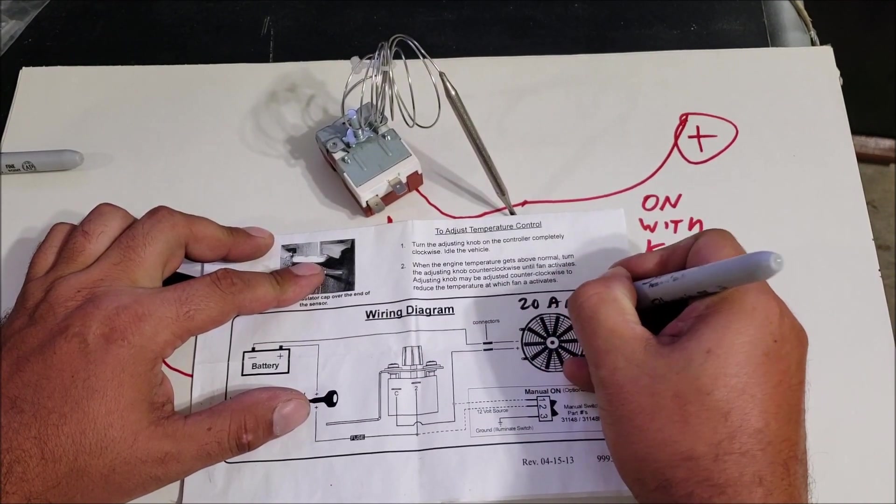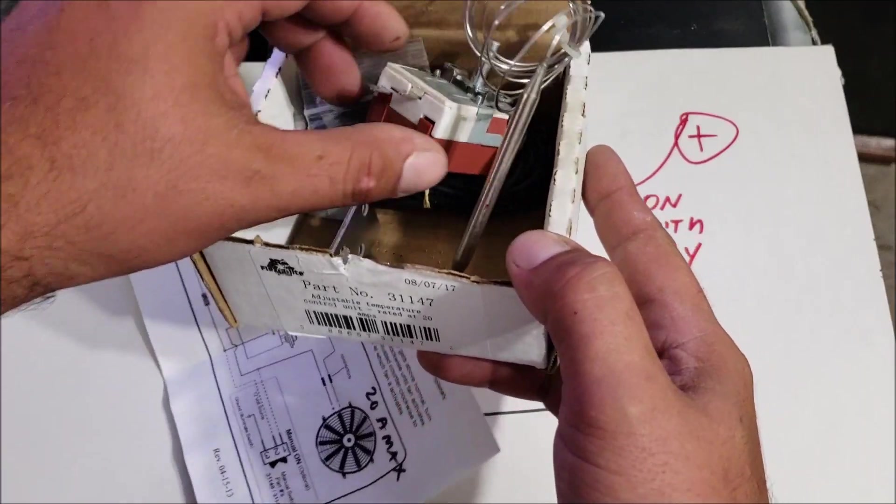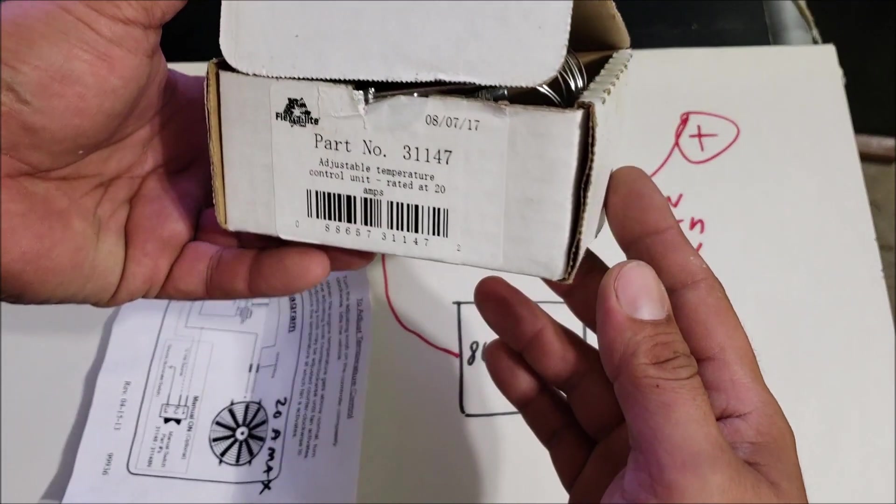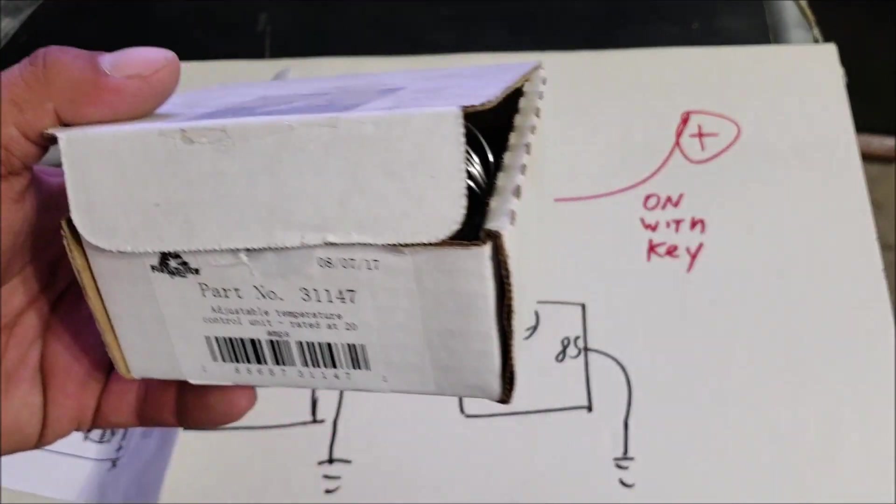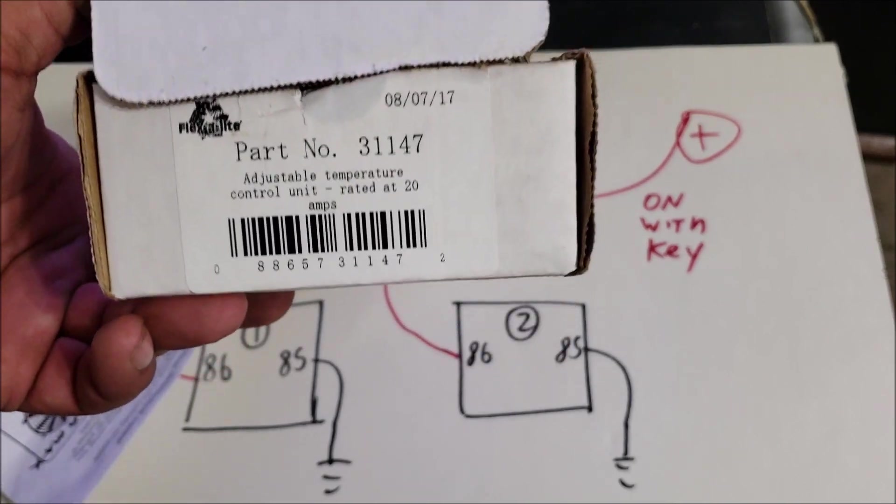This is actually kind of misleading. It should say like 20 amp max right here. I like this switch, it comes with a little mounting hardware and everything. It's like under 20 bucks. I'll definitely buy more of these in the future. Great product, I like Flex-a-lite.